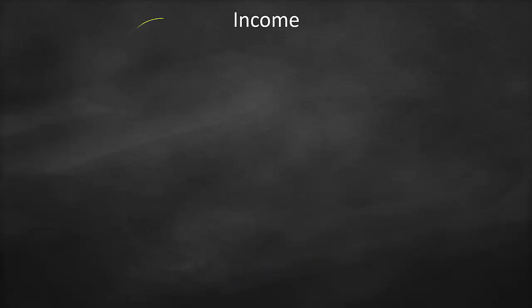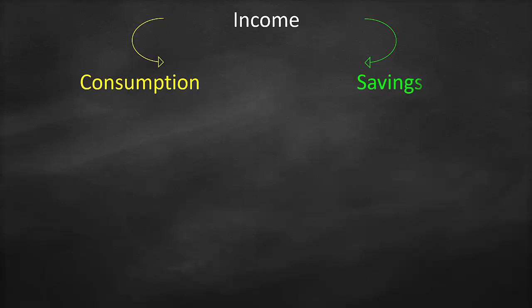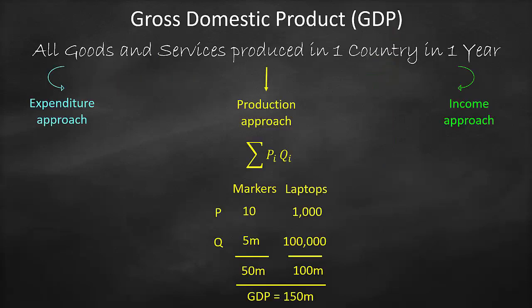Let's look at the expenditure approach. Every time you receive income, you will consume part of it — this is consumption — and save the rest. With your savings, you could invest yourself by starting a project, or put the savings in a bank so an investor can take a loan and invest it. Therefore, savings lead to investment.